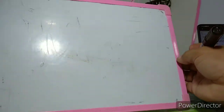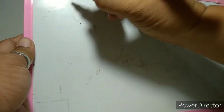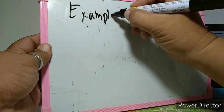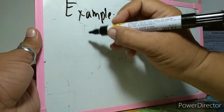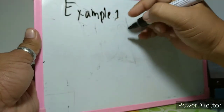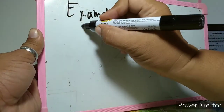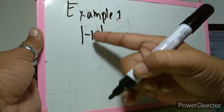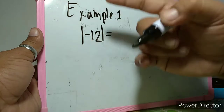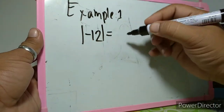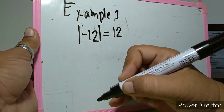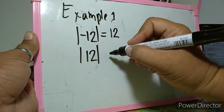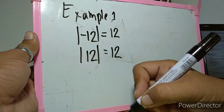Let us have some examples. Get the absolute value of negative 12 — the absolute value of negative 12 is equal to 12. How about the absolute value of positive 12? The absolute value of positive 12 is also equal to 12.